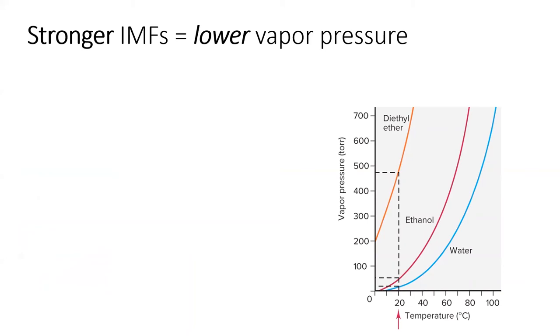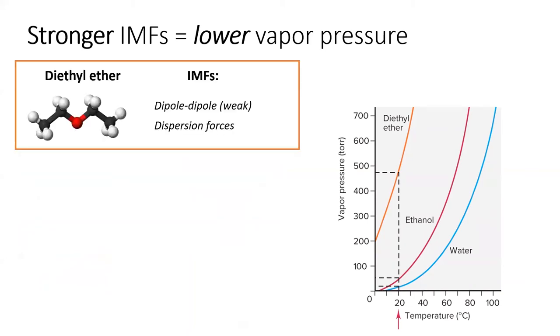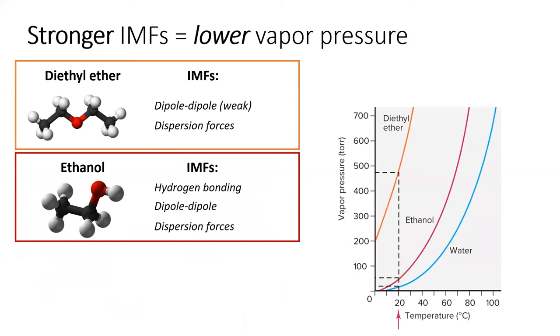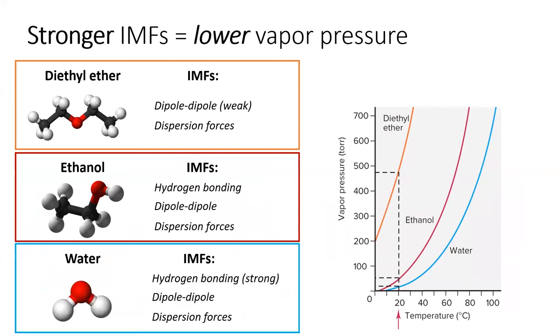First, we'll compare the IMFs of the three substances shown. Diethyl ether is a weakly polar molecule, so it will exhibit weak dipole-dipole IMFs along with the omnipresent dispersion forces. Ethanol can engage in hydrogen bonding and has a stronger dipole-dipole interaction. Water's hydrogen bonding forces are the strongest of all, and it also has dipole-dipole and dispersion IMFs. When we compare the vapor pressures of these three substances, we see that diethyl ether has the highest vapor pressure. This makes sense because there's less attractions holding the diethyl ether molecules together in the liquid phase. On the other hand, water has the strongest IMFs of these three substances, and therefore water has the lowest vapor pressure.